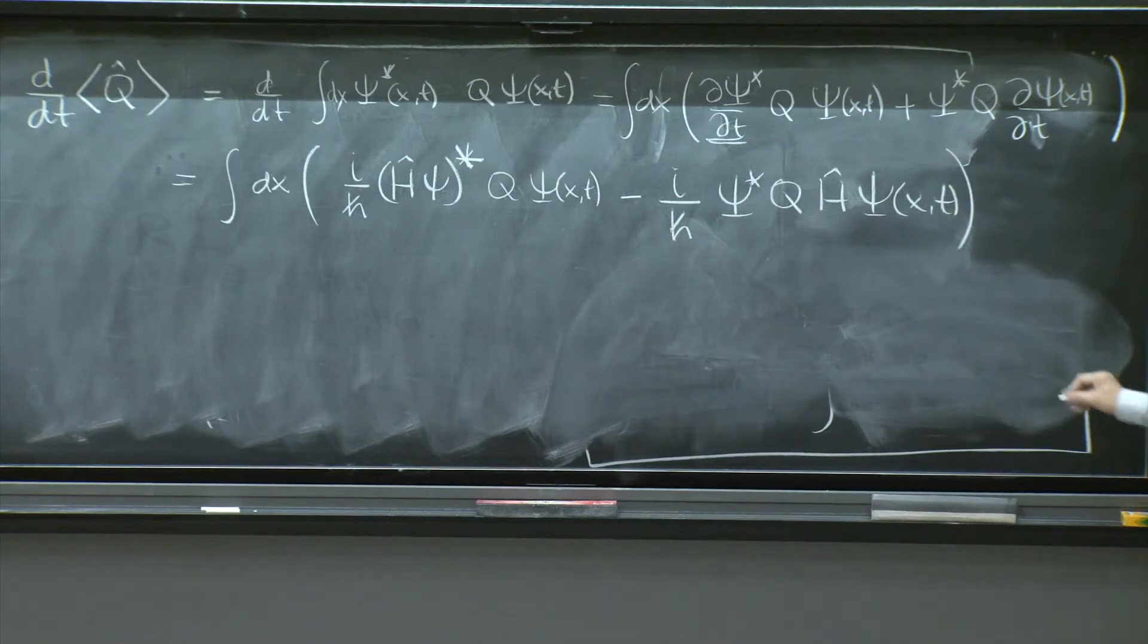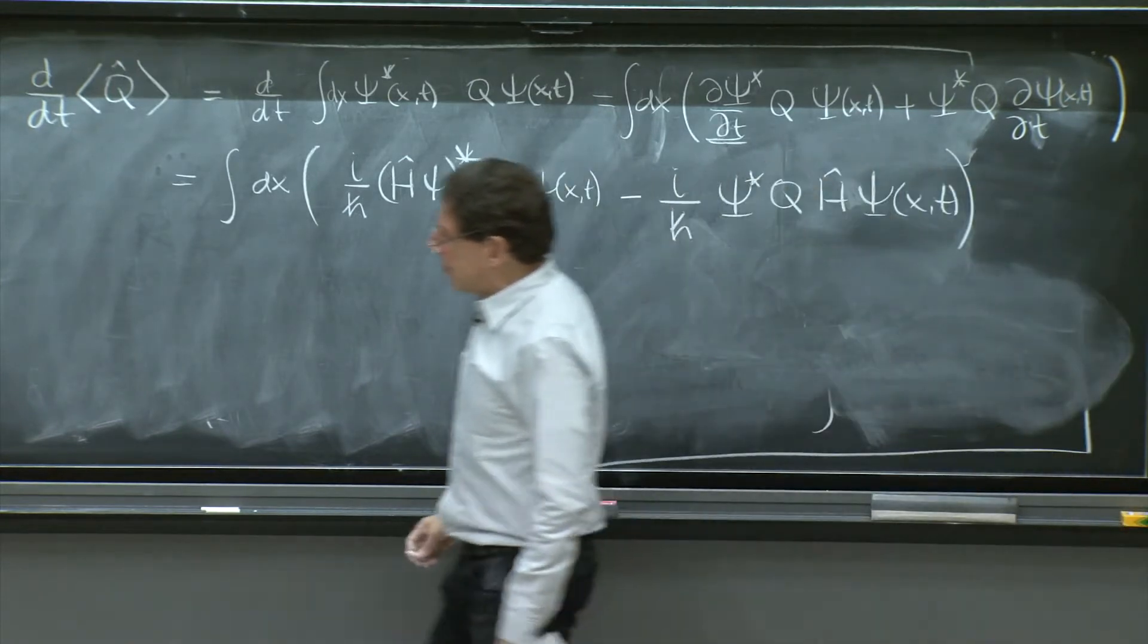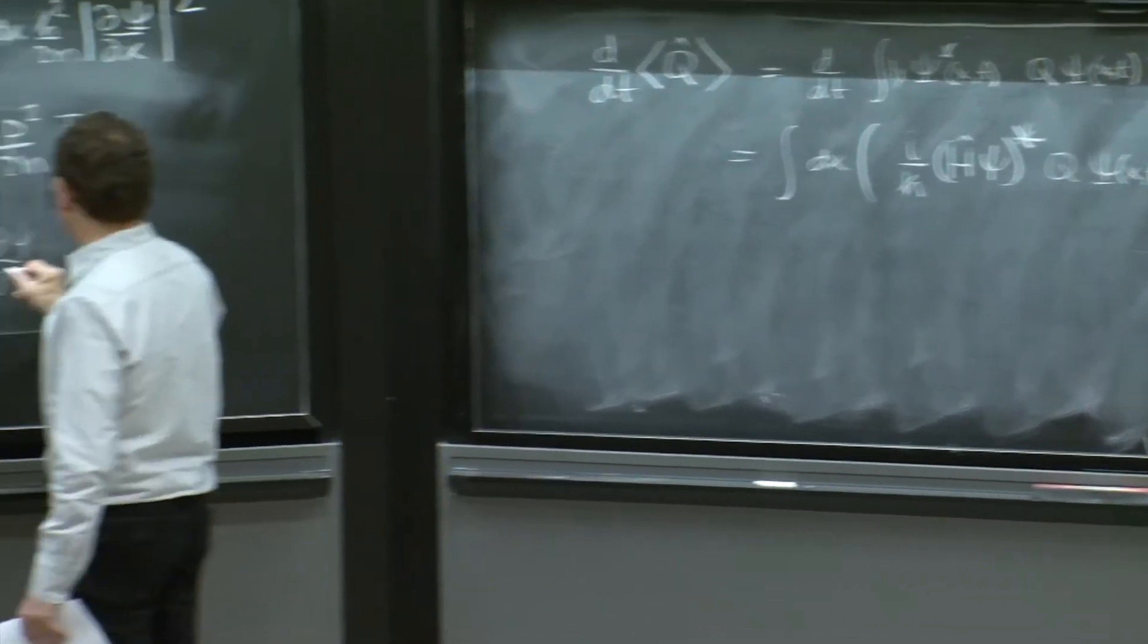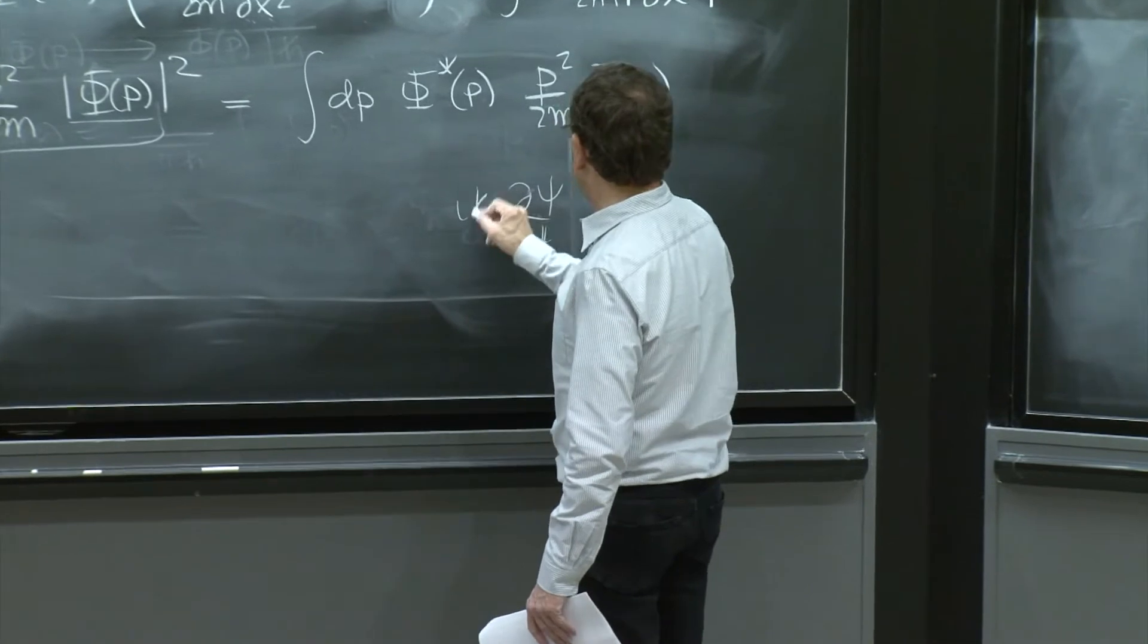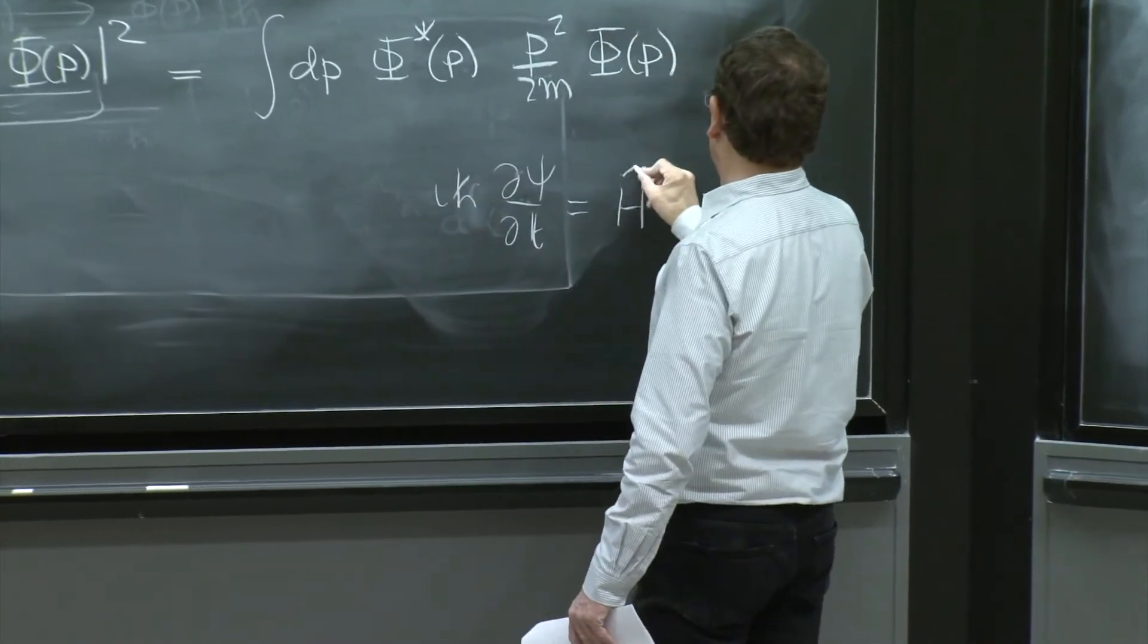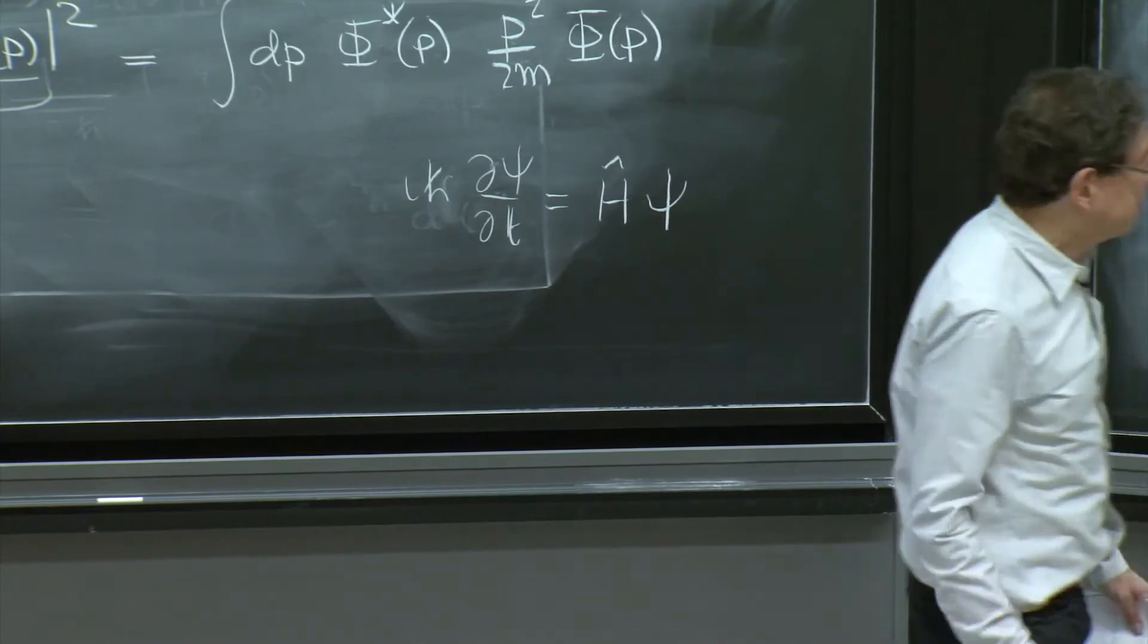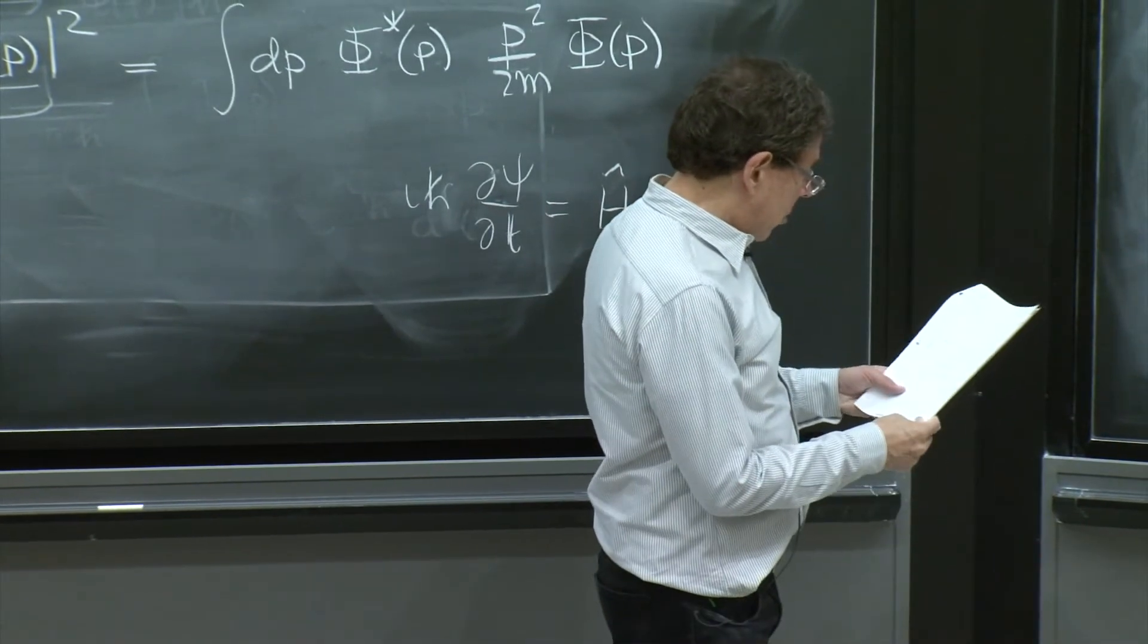So we use the Schrödinger equation in the form i h bar d psi dt, equal h psi. I used it twice.